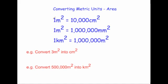Here are the common conversions you should know: one meter squared is 10,000 centimeters squared; one meter squared is one million millimeters squared; and one kilometer squared — because a kilometer is 1,000 meters — is equal to one million meters squared. If you ever forget, just remember that one meter is 100 centimeters and 100 times 100 is 10,000, so one meter squared is 10,000 centimeters squared.